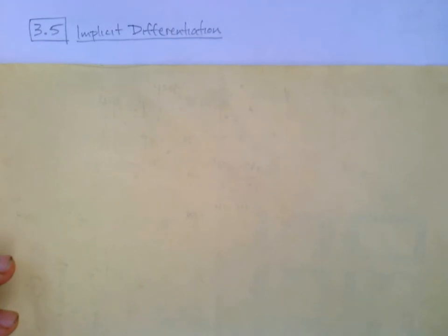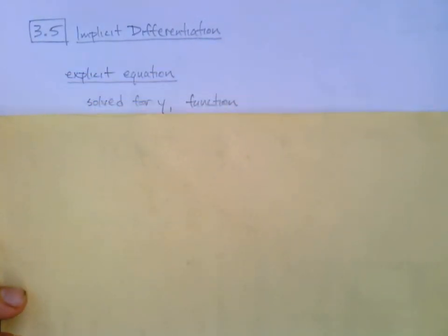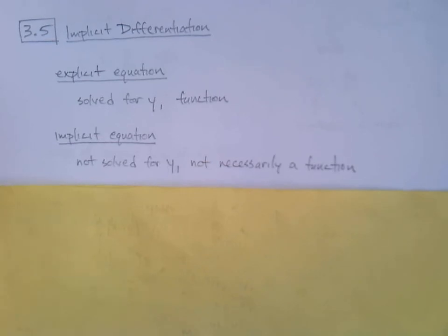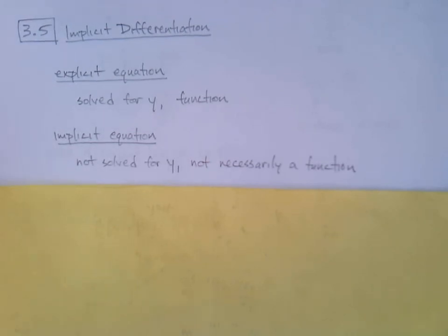In section 3.5 we learn about implicit differentiation — what it is and how to do it. First, let's define an implicit equation. An explicit equation is an equation that's been solved for y; it looks like y equals something. We more commonly refer to those as functions.